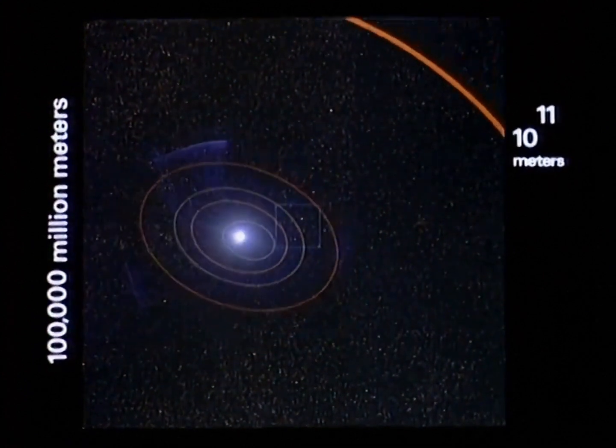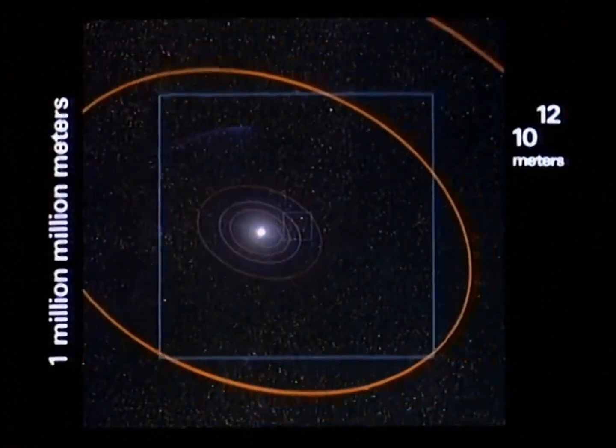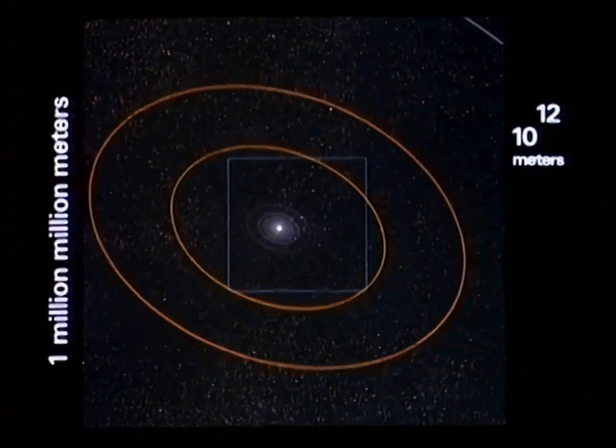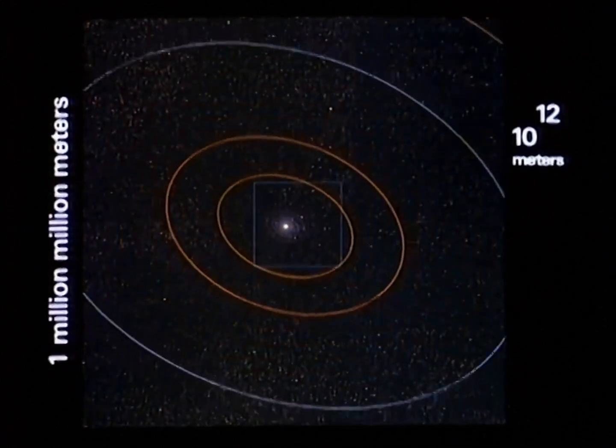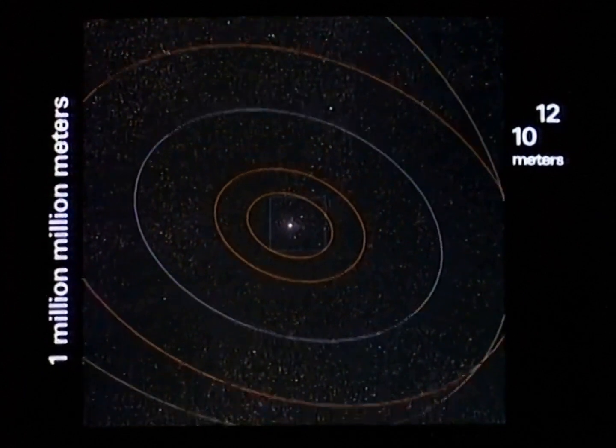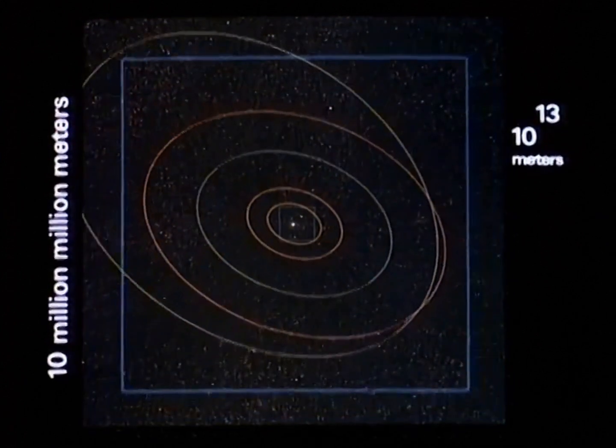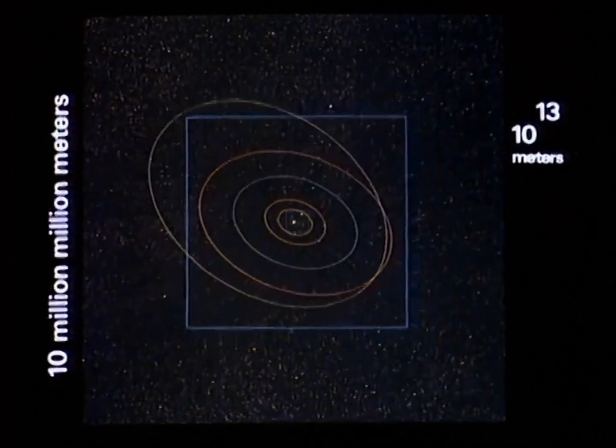Followed by the massive outer planets, swinging wide in their big orbits. That odd orbit belongs to Pluto. A fringe of a myriad comets too faint to see completes the solar system.